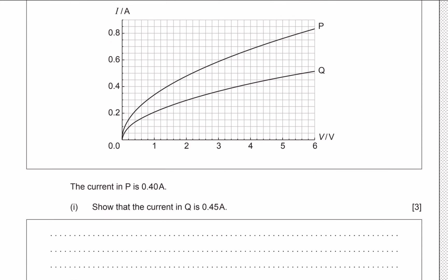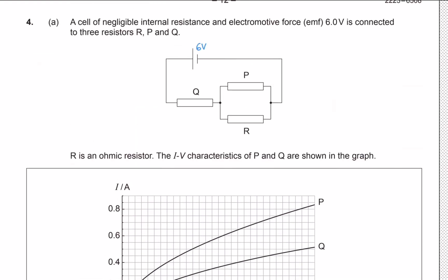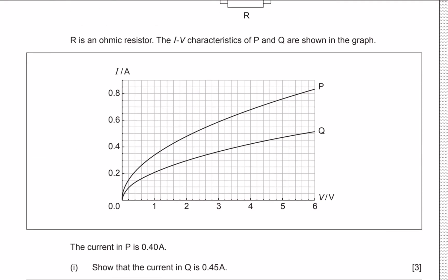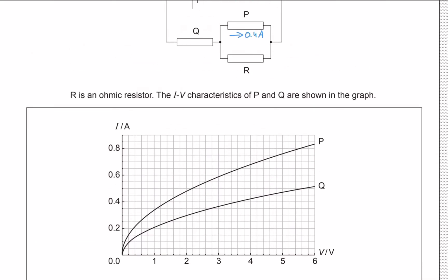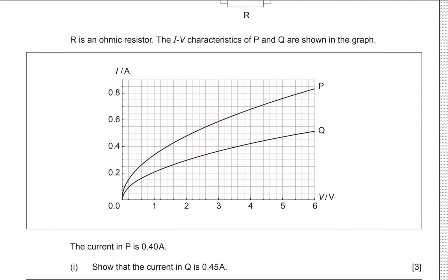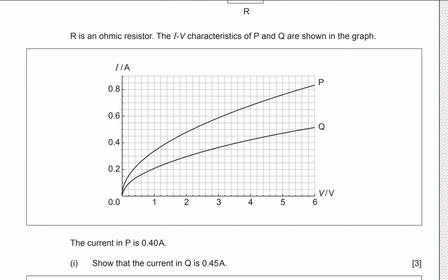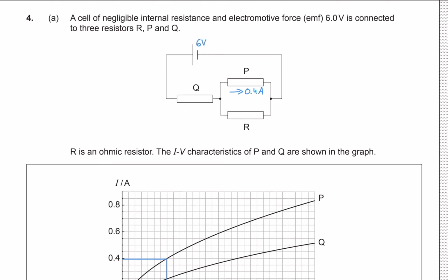We're told the current in P is 0.4 amps, and we need to show that the current in Q is 0.45 amps. We'll use the graph showing the characteristics of P and Q. Since there's a current of 0.4 amps in P, we can read from the graph that the voltage across P is 1.4 volts.